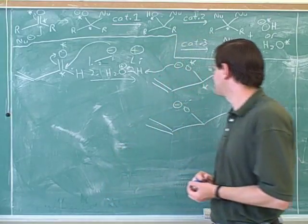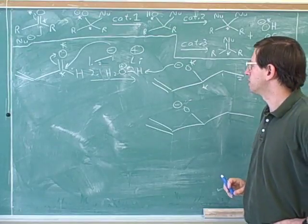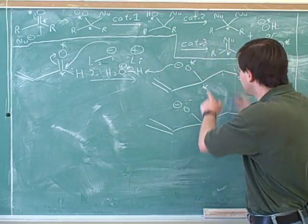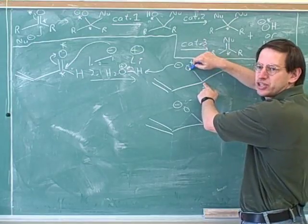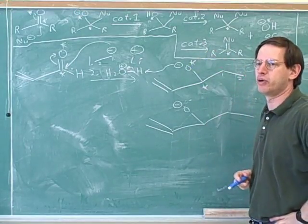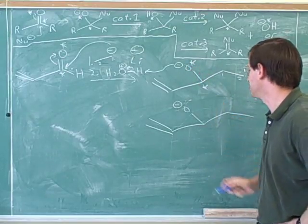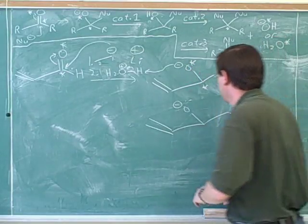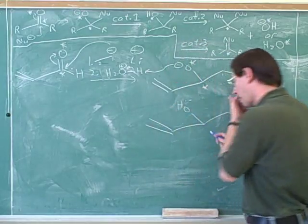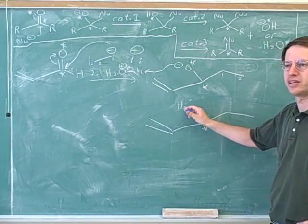I just want to point out why it's logical to call this a 1,2-addition, because the two atoms that were affected here are right next to each other. So that's not IUPAC nomenclature, obviously, to call them 1 and 2. It just indicates that they're right next to each other — the two atoms that are being affected. This atom gained a carbon chain, and this one gained a hydrogen.